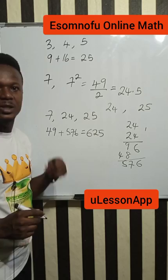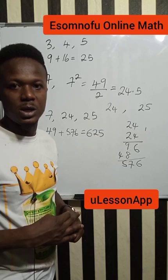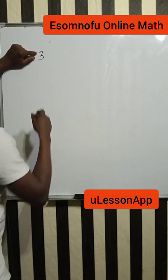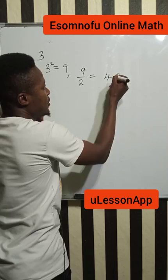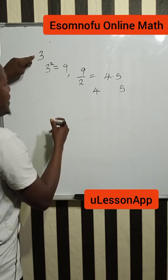Now supposing I want to get another Pythagorean triple. This is how to do it. Maybe I want to use 3. I will just come and square 3. 3 squared is 9. Now divide this 9 by 2. When you divide 9 by 2, you are getting 4.5. And 4.5 lies between 4 and 5. Therefore, the Pythagorean triple you will get is 3, 4, and 5.